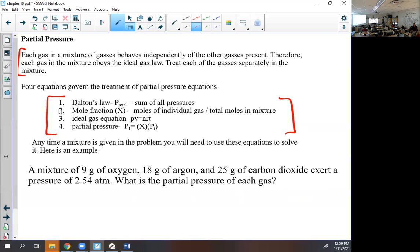Four equations govern the treatment of partial pressure. First, Dalton's law: P total equals P1 plus P2 plus P3, etc. Second, mole fraction: X equals moles of individual gas divided by total moles in mixture. Third, ideal gas equation: PV equals nRT. Fourth, partial pressure: P of one gas equals X times P total. We will use all of these combined.